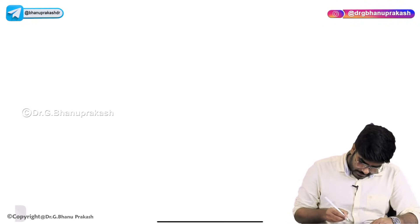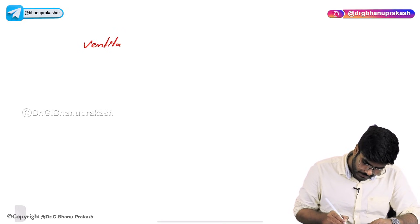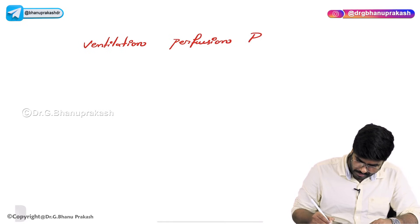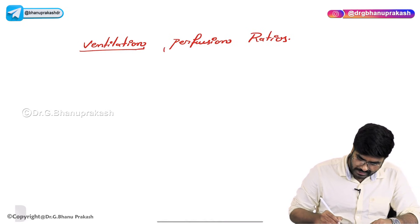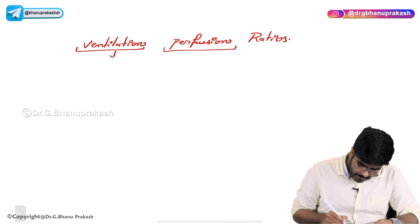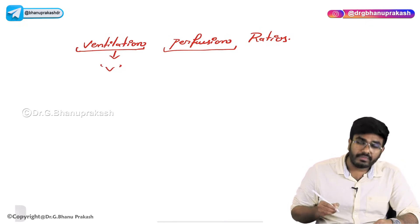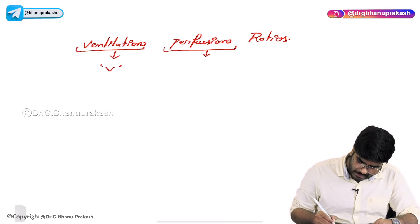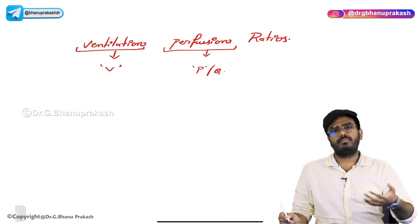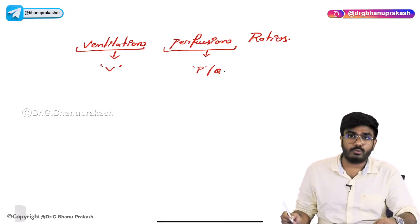Welcome back. Now let's discuss ventilation-perfusion ratios. We have discussed ventilation and perfusion before. Ventilation is denoted with V, and perfusion is denoted with P or Q — Q is also used as the notation for perfusion.